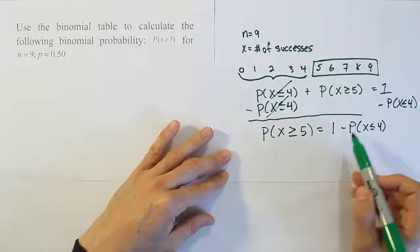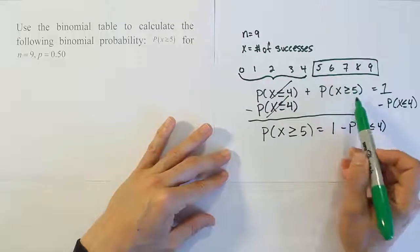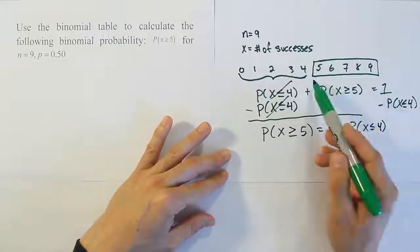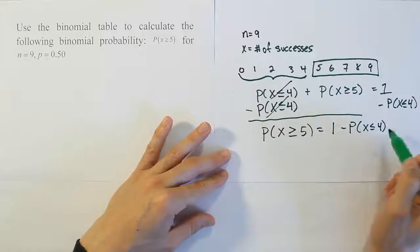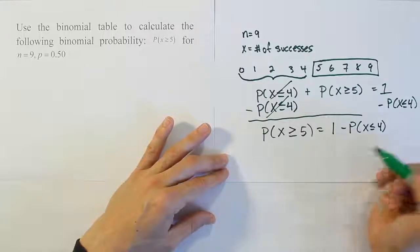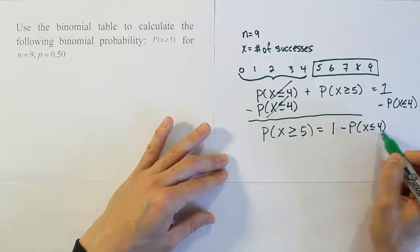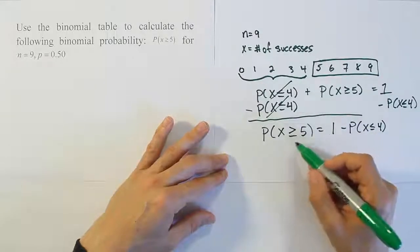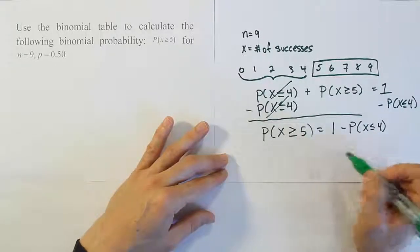So what I actually have to do is when the problem says x is greater than or equal to 5, I've got to look up 4 on the table and then subtract the answer I get from the table from the number 1. So that's the key thing. Remember, the table only goes from the number you give it down. So it answers less than or equal to problems for you.